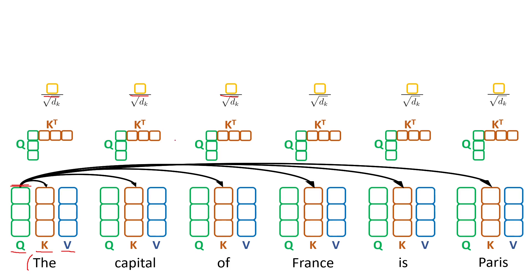dk is basically the dimension of the query vector, the key vector, or the value vector. This looks a little bit random, I agree with that, but after you see the next operations it will make more sense why we do that.